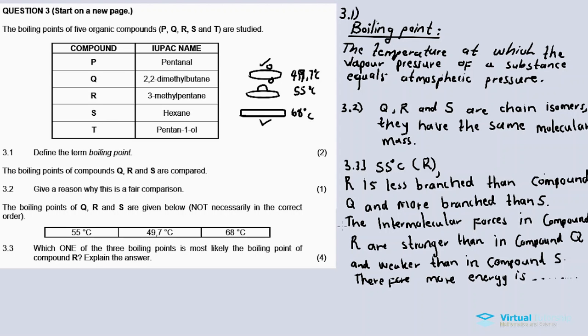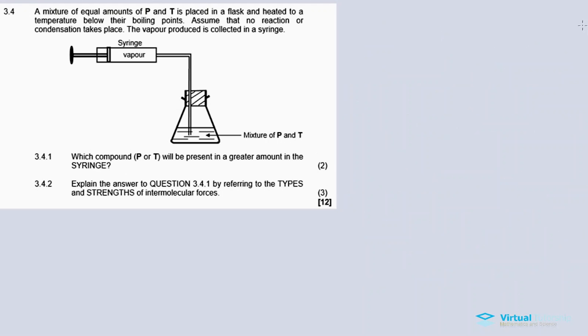3.4: A mixture of equal amounts of P and T is placed in a flask and heated to a temperature below their boiling points. Assume that no reaction or condensation takes place, but the vapor pressure produced is collected in a syringe. No reaction, so P and T don't react, but after heating up they collect the vapor in the syringe.